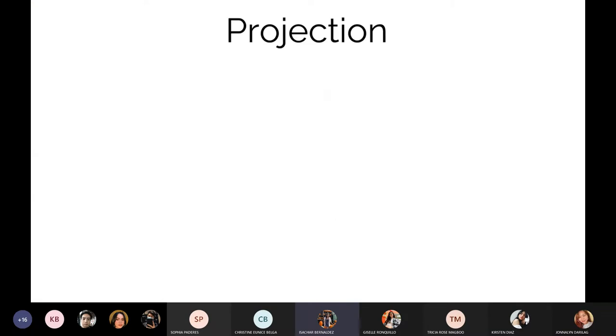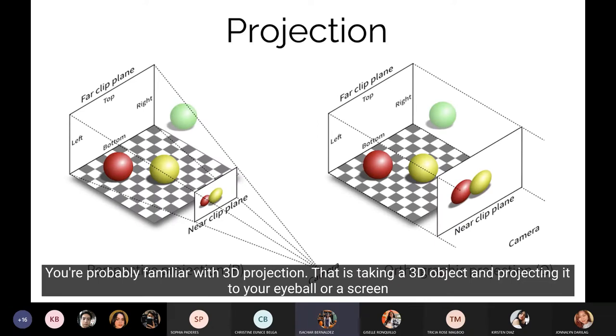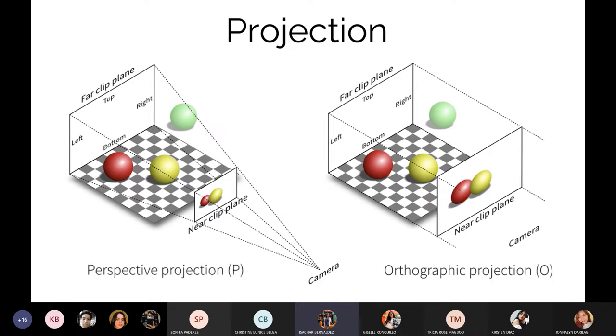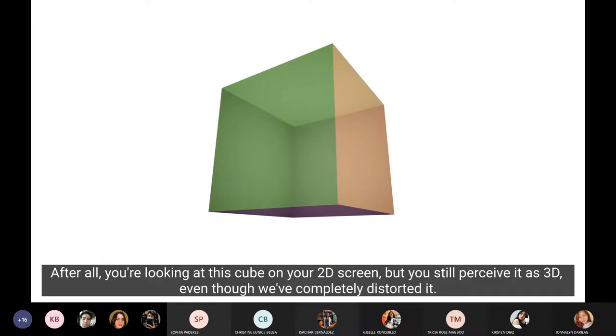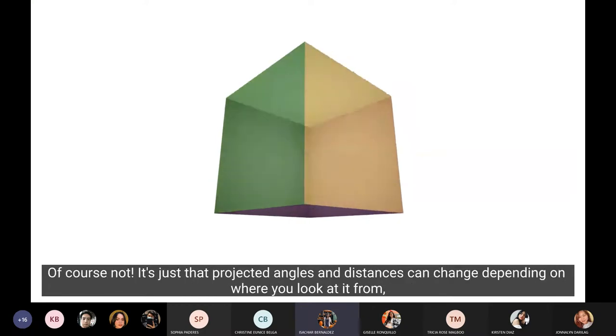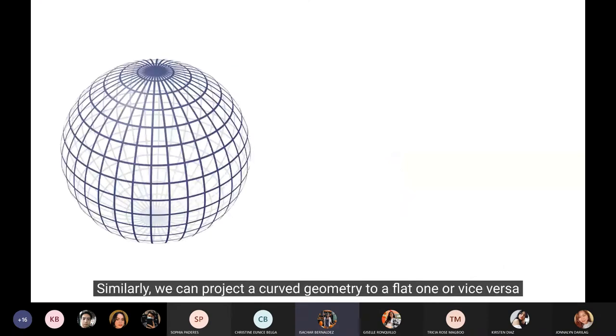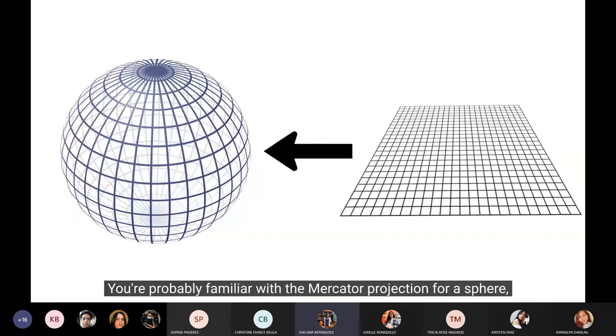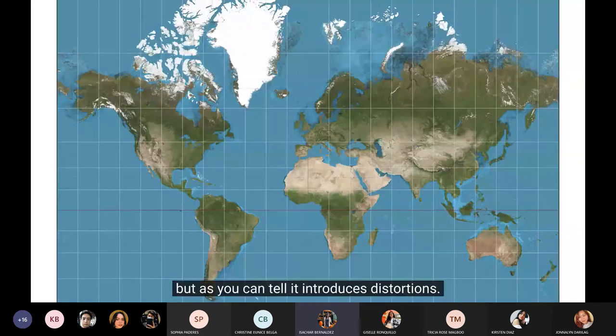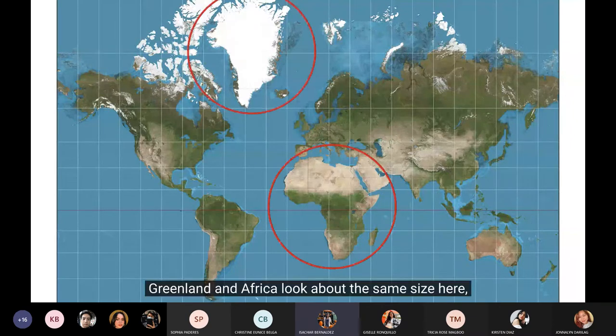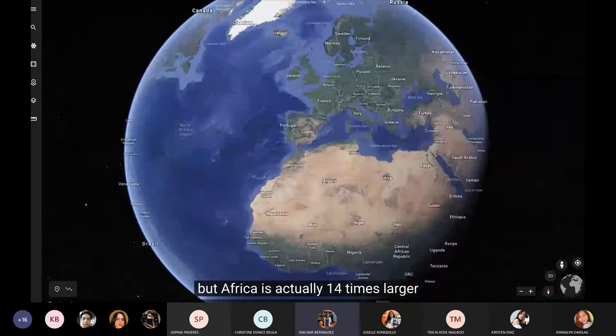The trick we're going to use is projection. You're probably familiar with 3D projection. That is taking a 3D object and projecting it to your eyeball or a screen. After all, you're looking at this cube. You see, it's still pretty good. Distorted it. This is supposed to be a square. Of course not. It's just that projected angles and distances can change depending on where you look at it from and what projection you use. Similarly, we can project a curved geometry to a flat one or vice versa. You're probably familiar with the Mercator projection for a sphere. But as you can tell, it introduces distortions.